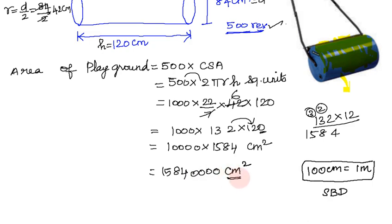But if it is not cm², then it does 100m divide. So 1,5,8,4,0,0,0 divided by 100 two times. One time divide means centimeter to meter, but centimeter square to meter square, we divide two times.